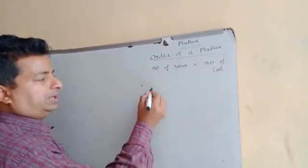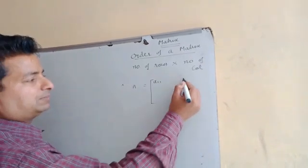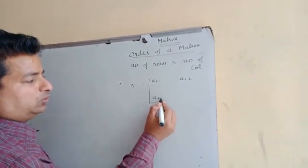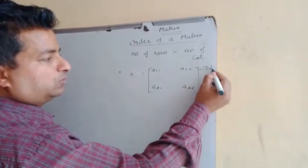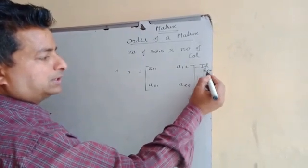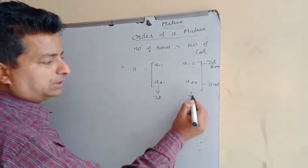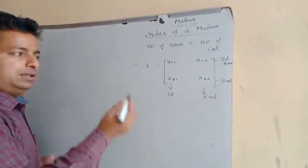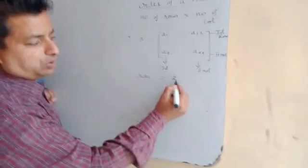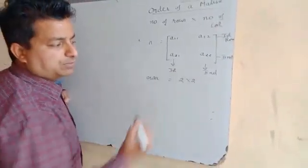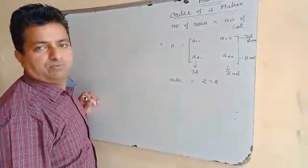For example, if we take a matrix A with elements A11, A12, A21, and A22 — this is called the first row, this is called the second row, this is called the first column, and this is called the second column. In this matrix, the order is number of rows which is 2, number of columns which is also 2. This means this matrix has an order of 2 by 2.